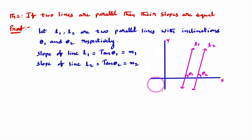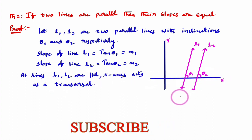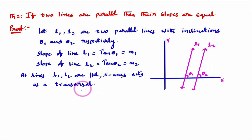Observe this diagram. If L1 and L2 are parallel, then the x-axis acts as a transversal. As the lines L1 and L2 are parallel and the x-axis acts as a transversal, we know that corresponding angles are equal. You can observe that θ1 and θ2 are the corresponding angles. Therefore, θ1 equals θ2.